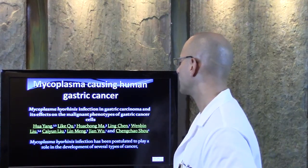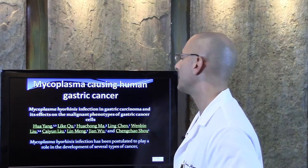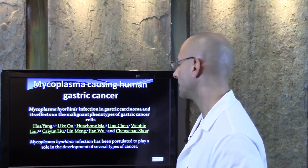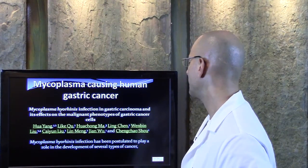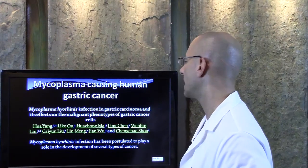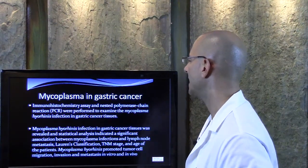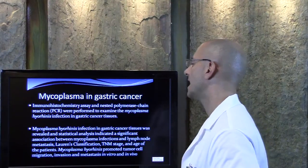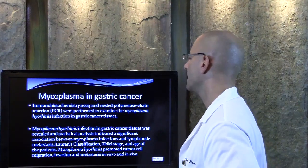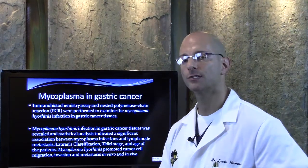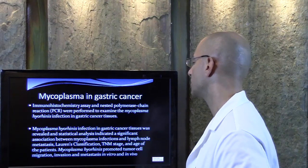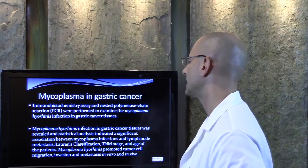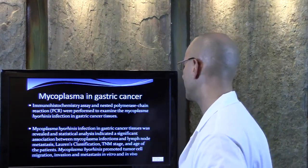Mycoplasma infection in gastric carcinoma and its effects on the malignant phenotypes — malignant stomach cancer cells. There's an article here — mycoplasma infection has been postulated to play a role in the development of several types of cancer. Mycoplasma in gastric cancer — immunohistochemistry assay and PCR testing, polymerase chain reaction PCR testing, were performed to examine the mycoplasma infection in gastric cancer tissues. Mycoplasma infection in gastric cancer tissues was revealed, and statistical analysis indicated a significant association between mycoplasma infections, lymph node metastasis, Lorenz classification, TNM stage, and the age of patients.